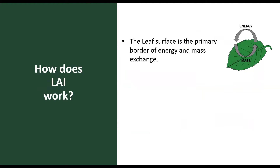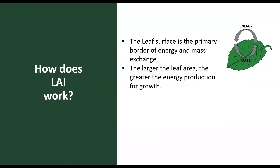The leaf surface is the primary border of energy and mass exchange. Important processes such as canopy interception, evapotranspiration and gross photosynthesis are directly proportional to LAI. You can consider the leaf surface as biological solar panels that produce energy via photosynthesis. The larger the leaf area, the greater the energy production for growth.